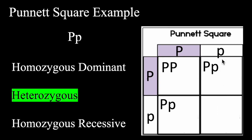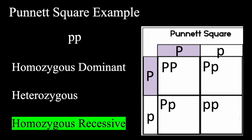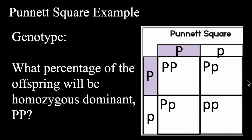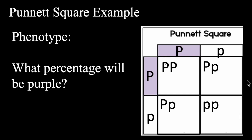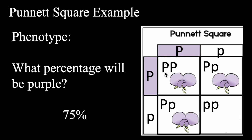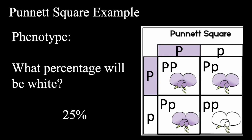In the bottom right box, I have a recessive allele at the top and a recessive allele on the left-hand side. I bring that recessive allele over to the right and bring that recessive allele down, and that is going to result in homozygous recessive. Heterozygous is going to be 50%, homozygous dominant is going to be 25%, and homozygous recessive is going to be 25%. What percentage will result in a purple phenotype? That's going to be 75%, since the dominant gene overshadows the recessive traits. You have 25% white, indicated in the bottom right-hand square.